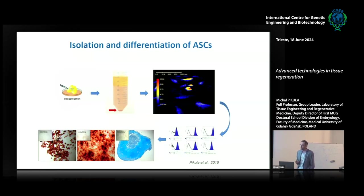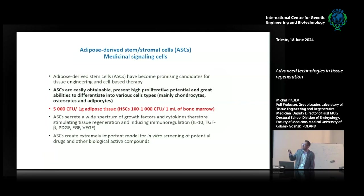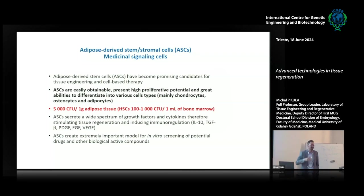Even if you isolate cells from elderly people, they behave quite similarly in terms of proliferating and differentiating. They normally differentiate to chondrocytes, adipocytes, and osteocytes. We also make different analyses of the cells, like flow cytometry to confirm that these are really stem cells with differentiation potential. Very often we call them medicinal signaling cells, although the nomenclature is still controversial — some people say adipose-derived stem cells, maybe stromal cells, mesenchymal stromal cells, medicinal signaling cells. We still discuss this when we send manuscripts, and reviewers always have strong suggestions about the terminology.